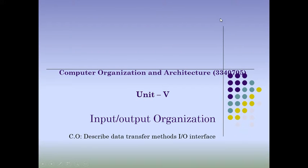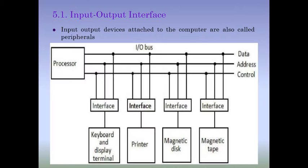We will start unit number five of Computer Organization and Architecture. Unit number five is about Input Output Organization, and the course outcome of this unit is to describe data transfer methods and input output interface. In this unit, we will learn about how external peripherals of a computer system — keyboard, mouse, printer, scanner, magnetic camera, microphone, speaker — communicate with the processor.